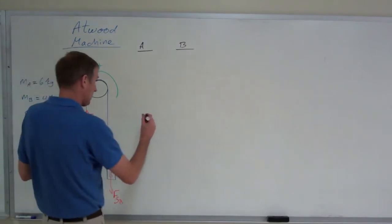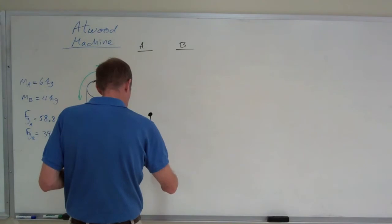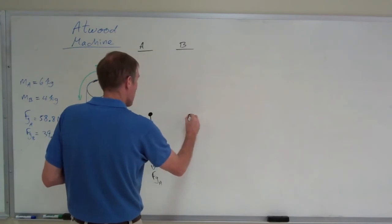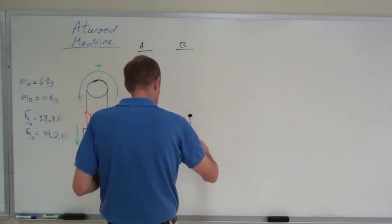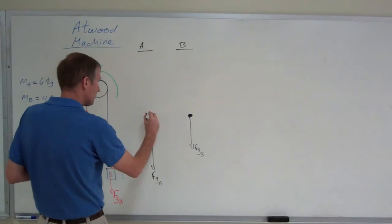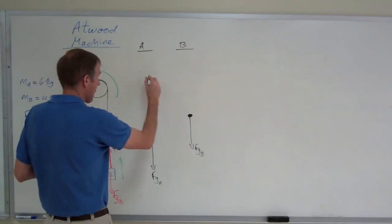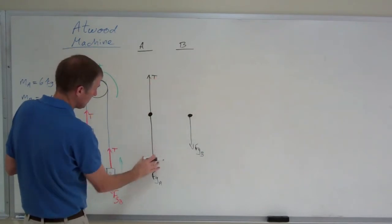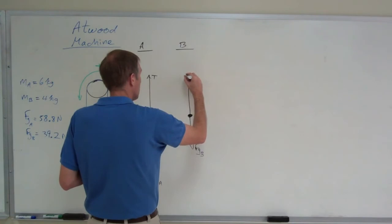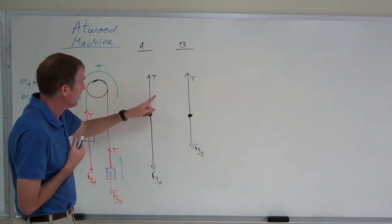Block A has weight. Block B has less weight. Block A accelerates downwards, so the tension arrow must be less than that. This tension arrow should be obviously less than that weight arrow for A. Block B accelerates upwards, and so this tension arrow should be greater than the weight of B.